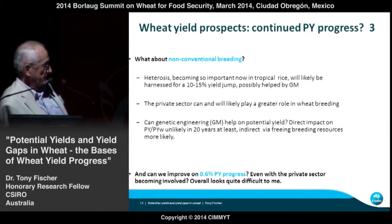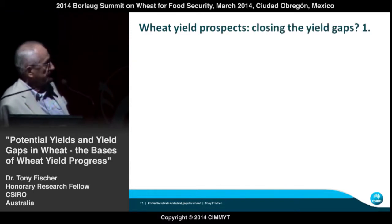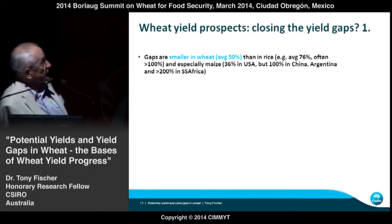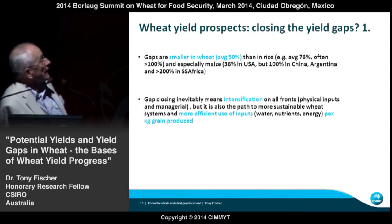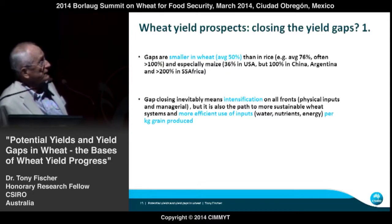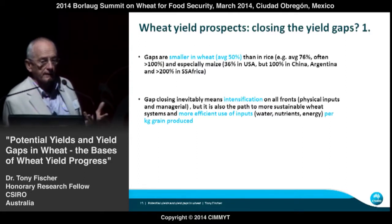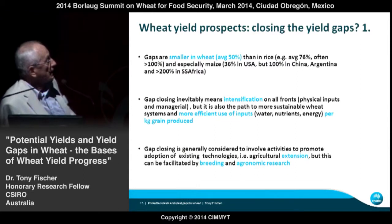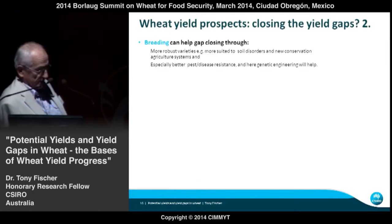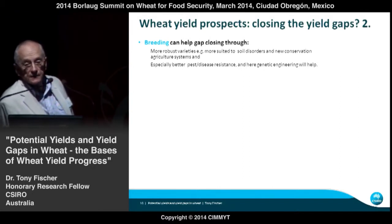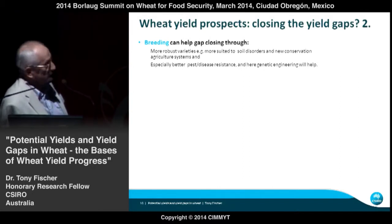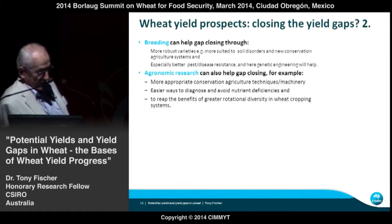Can we expect to improve on the 0.6% progress? I don't think so, even with the private sector involved — we'll be lucky if we can keep it up. Closing the gap: the gaps for wheat are quite small relative to other major staples. Gap closing means intensification on all fronts, and this is fine because it's the path to more sustainable and efficient systems — more efficient use of inputs per kilogram of grain produced. Extension has a key role in gap closing, but research can help too.